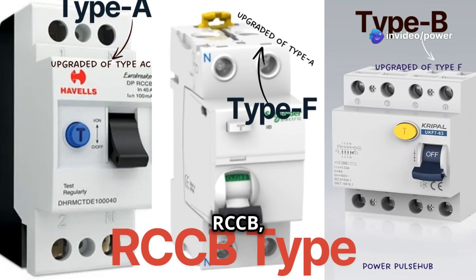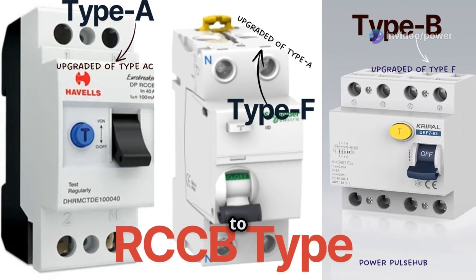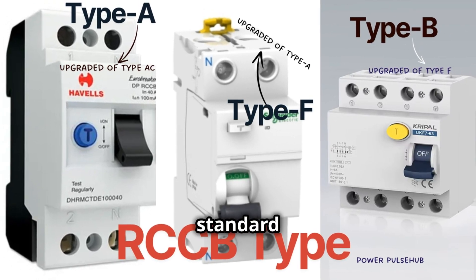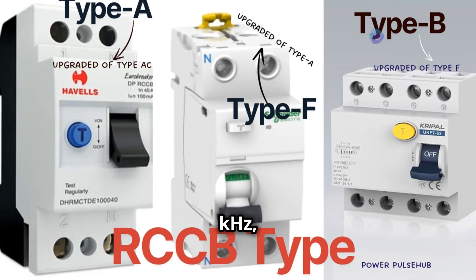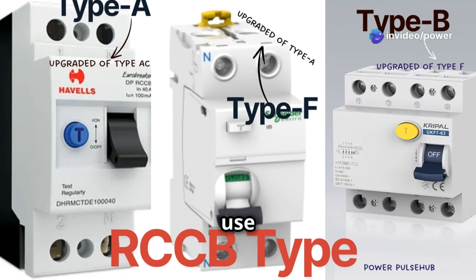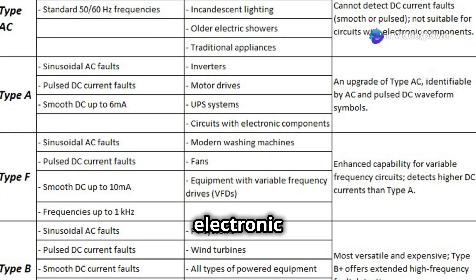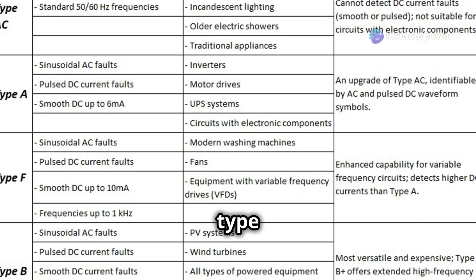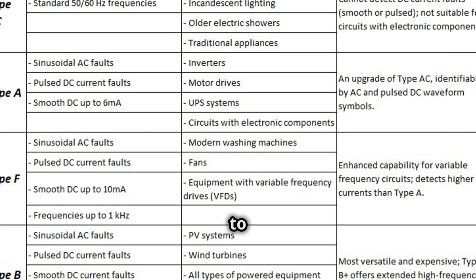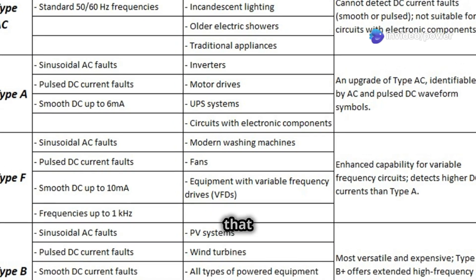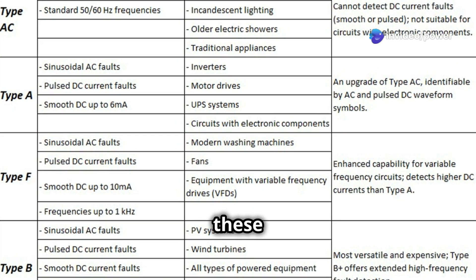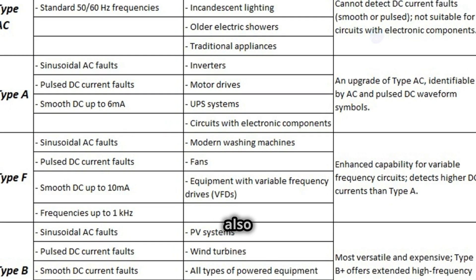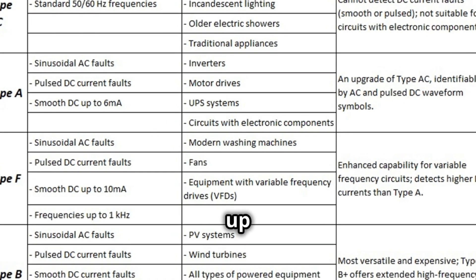The RCCB with Type F covers all the capabilities of Type A and Type AC, but with the added ability to sense frequencies other than the standard 50/60 Hz. It can detect up to 1000 Hz (1 kHz), making it well suited for use with variable frequency drives and other electronic equipment. Use this type of RCCB for applications where you need to protect persons from fault currents in modern washing machines, fans, and other equipment that uses a variable frequency drive.